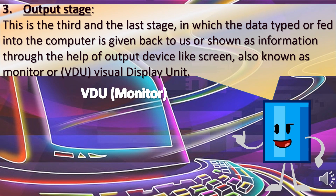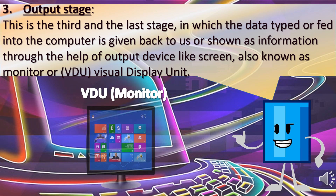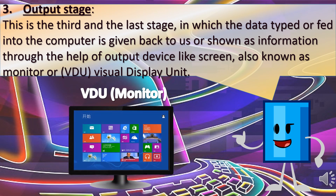3. Output Stage. This is the third and last stage in which the data typed or fed into the computer is given back to us or shown as information through the help of output devices like the screen, also known as monitor or VDU.